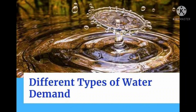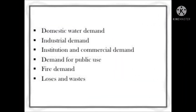Before designing any water supply scheme, we need to know how water will be used in different sectors. It is not entirely possible to determine actual water consumption, but using certain empirical formulas we can determine consumption for different uses, such as domestic water demand, industrial demand, institutional and commercial demand, public use demand, fire demand, and losses and wastes.